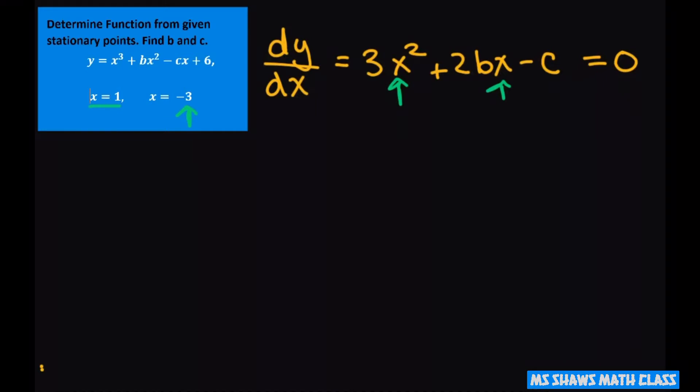So what we're going to do is just plug it in and solve for b and c. So that's going to be for the first one we're going to have x equals 1. Then we're going to have x equals negative 3.